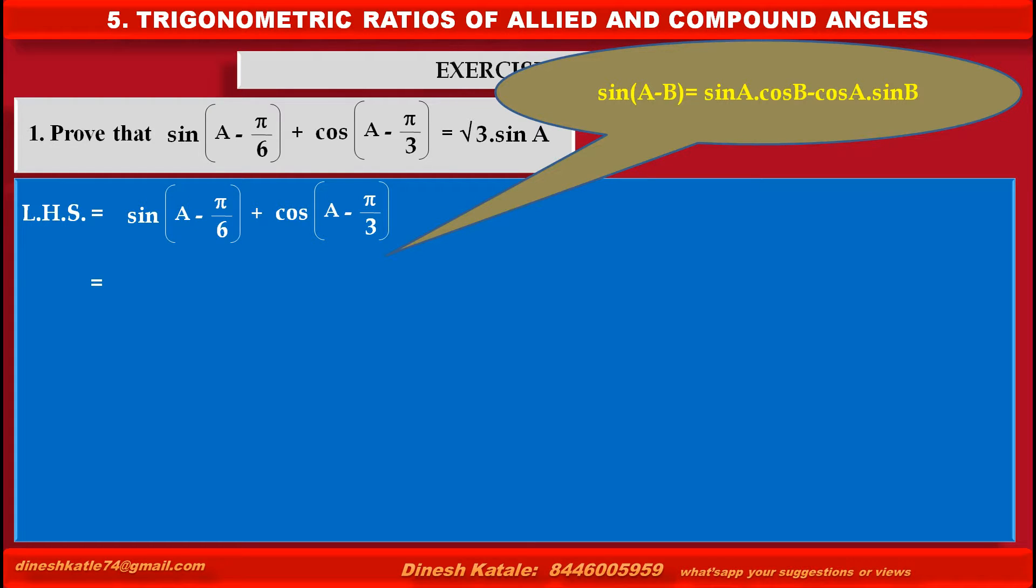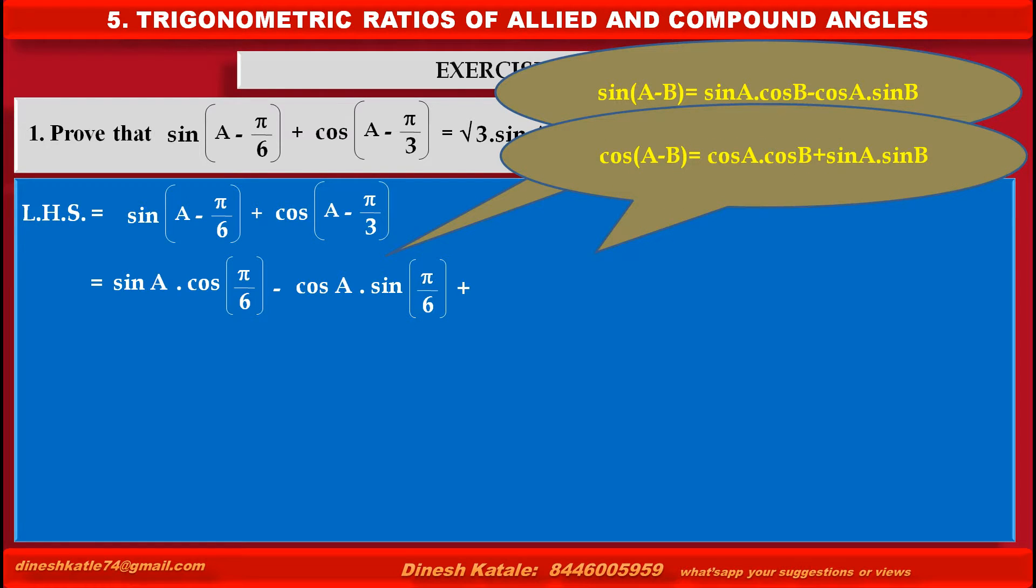we get sin A cos(π/6) - cos A sin(π/6) plus, by using the formula cos(A - B),